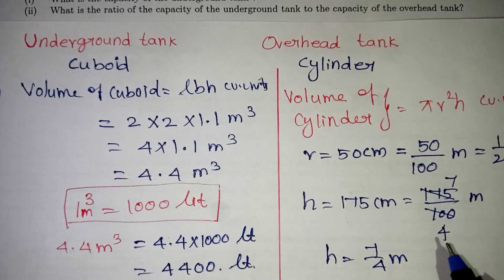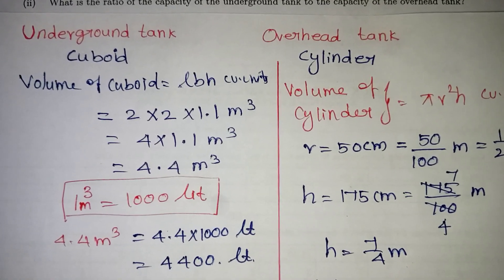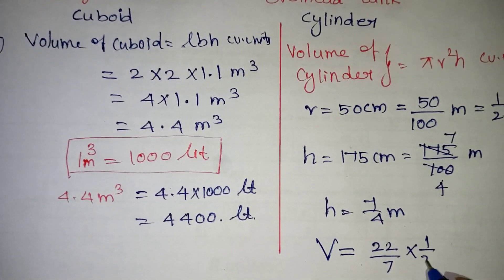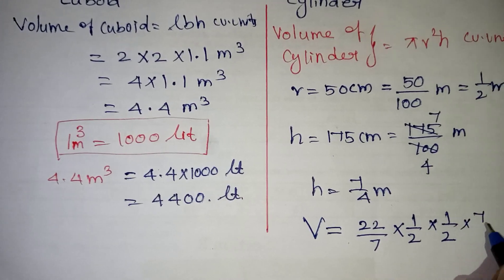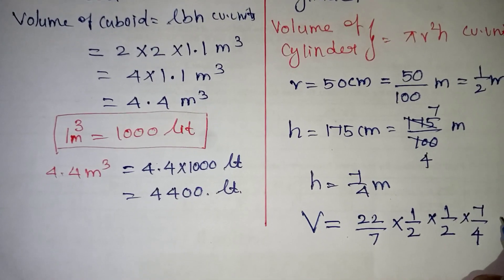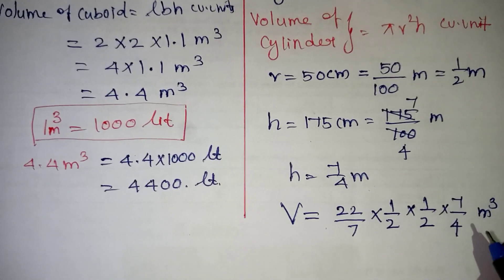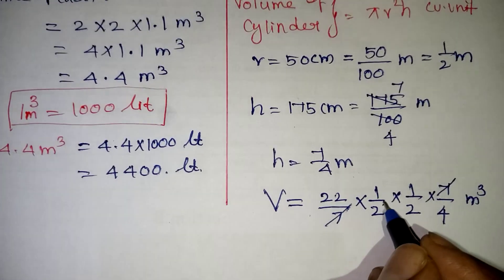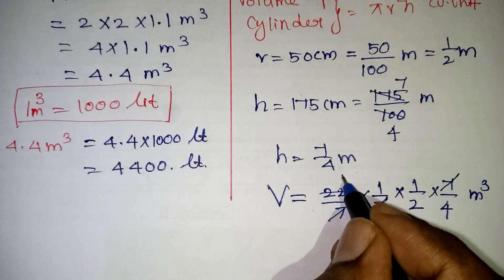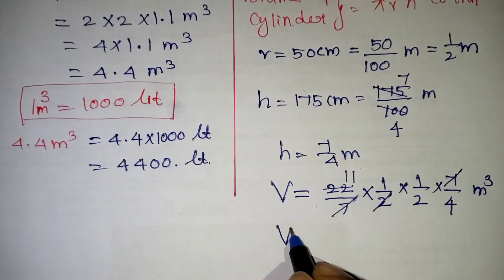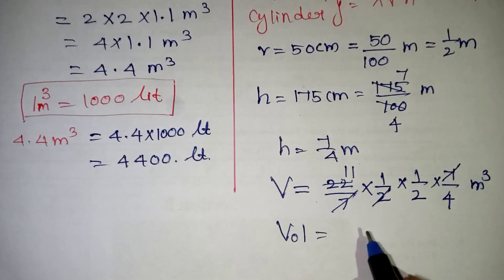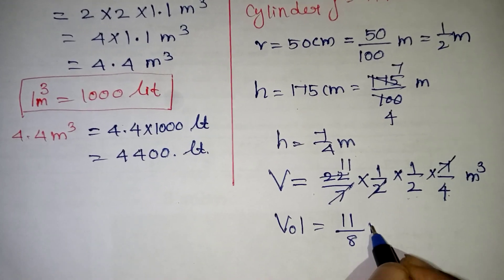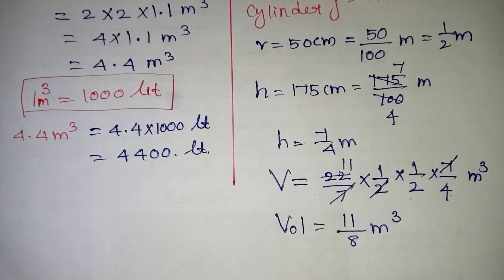Volume = π r² h, where π = 22/7, radius = 1/2, so r² = 1/4, and h = 7/4 metres. So Volume = (22/7) × (1/4) × (7/4). Cancelling the 7s, we get numerator = 22 × 1 × 1 = 22, and denominator = 4 × 4 = ... simplifying gives 11/8 cubic metres.